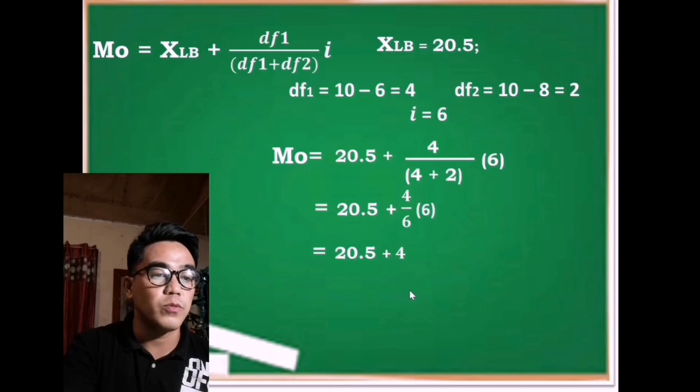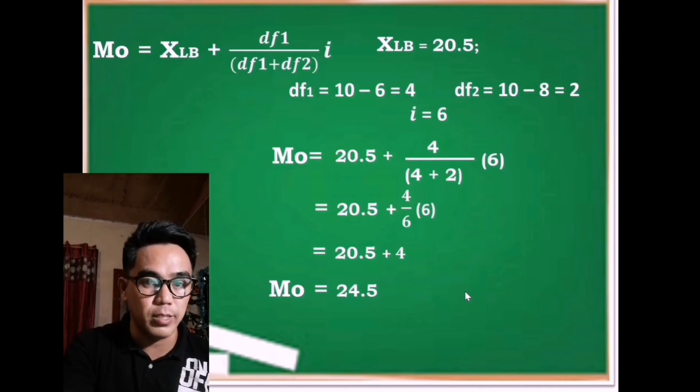Let us go further by adding 20.5 plus 4. The mode is 24.50 or 24.5. This is how we solve the mode of grouped data.